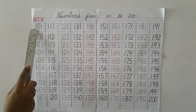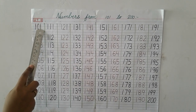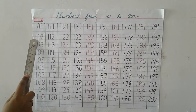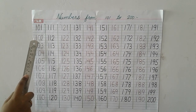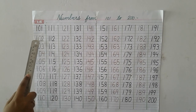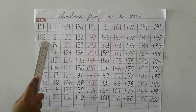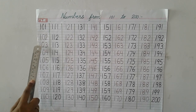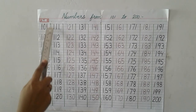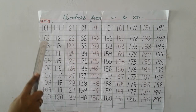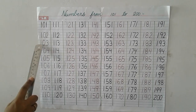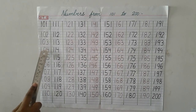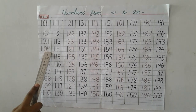Here 1, 0, 1 is 101. For writing 102, we write 1, 0, 2. For writing 103, we write 1, 0, 3. The 3 is in 1's place, 0 is in 10's place, and 1 is in 100's place. 1, 0, 4 — that is 104.